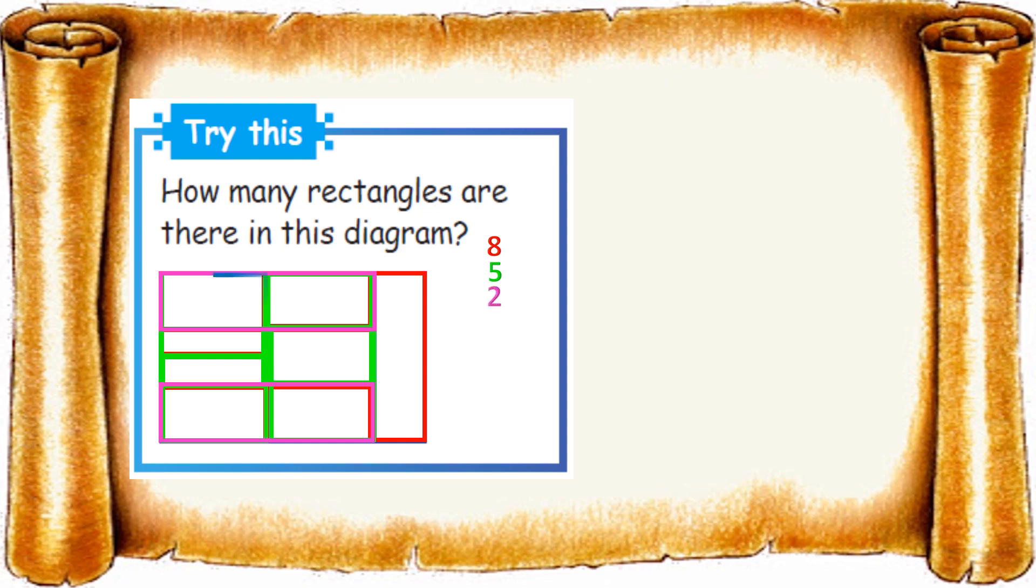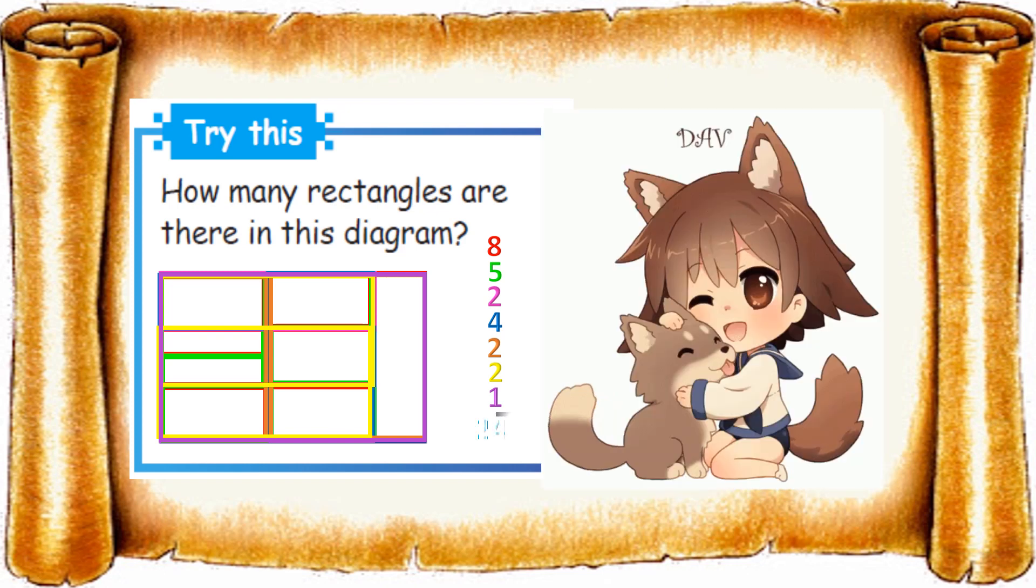Now we'll join 3 rectangles as 1 rectangle: 1, 2, 3, then 4. Then we add 5 rectangles: 1, 2. This also: 1, 2, 3, 4, 5. This will be one more rectangle. Here also 2. Overall rectangle, 1. If we add all these, we will get 24 rectangles. If you can't understand, just go back and watch one more time.